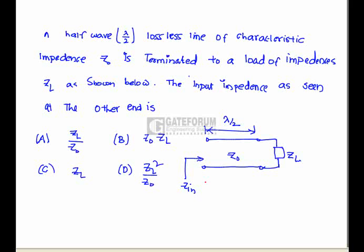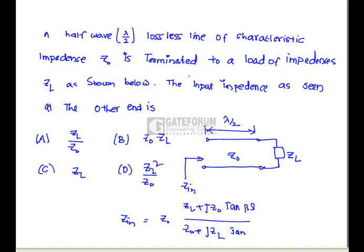Question is a half wave lossless line of characteristic impedance Z0 is terminated to a load of impedance ZL as shown below. The input impedance seen at the other end is. Here lambda by 2 length of transmission line is shown and terminated with a ZL whose characteristic impedance is Z0. We know that Zin equation as Z0 ZL plus JZ0 tan beta L divided by Z0 plus JZL tan beta L. This is the generalized input impedance equation for the transmission line.